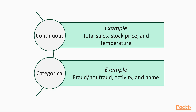Measuring this comparison between computed results and ideal results should always take priority over speed optimizations. Generally, there are some types of results that we will need to evaluate. The first one is continuous — results such as total sales, stock price, and temperature that can take any continuous numerical value. The next one is categorical — results such as fraud, not fraud, activity, and name that can take one of a finite number of categories.